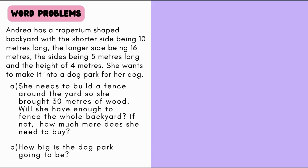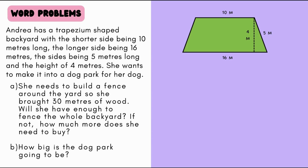Part B asks how big the dog park is going to be. Part A is essentially asking us to find the perimeter and see if it's bigger or smaller than 30, whereas part B is asking us to find the area. Our first step should be drawing out the dog park. The shorter end is 10 meters, the longer end is 16 meters, with the two sides being 5 meters and a height of 4 meters. The perimeter is just adding all the sides together: 10 plus 16 plus 5 plus 5, which gives us 36 meters.